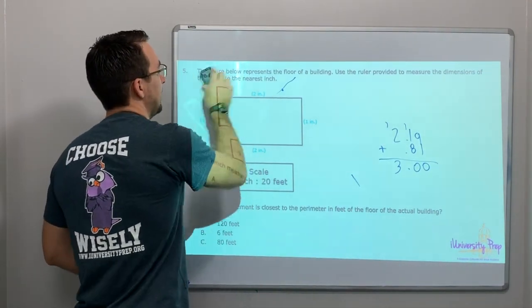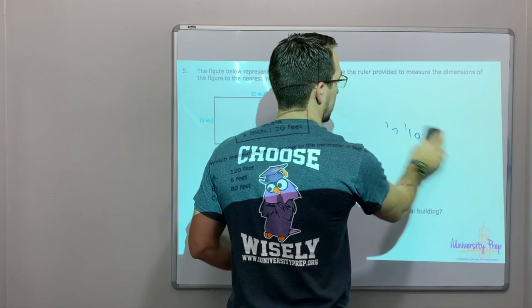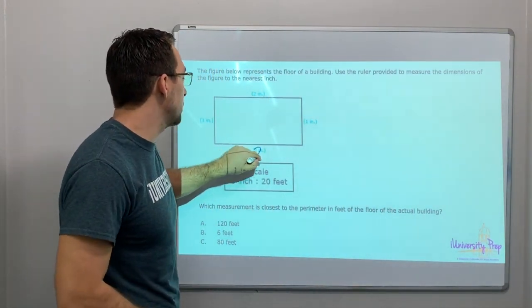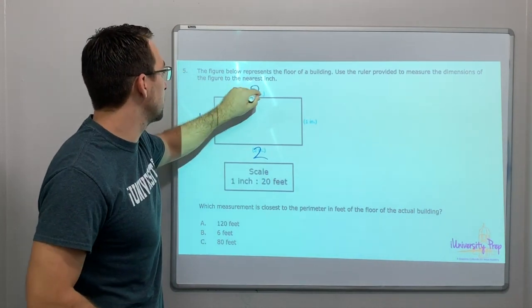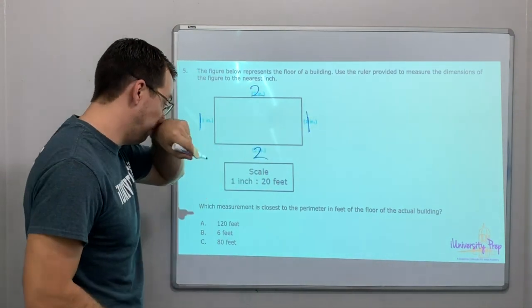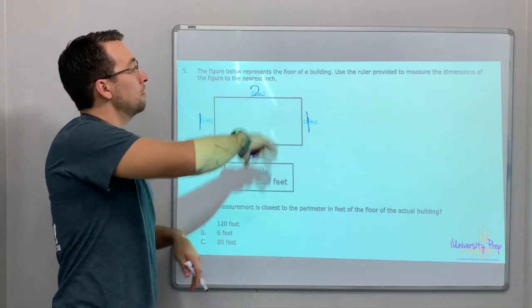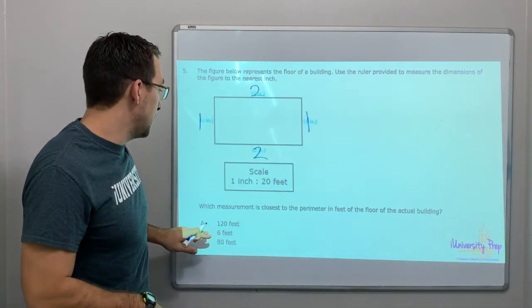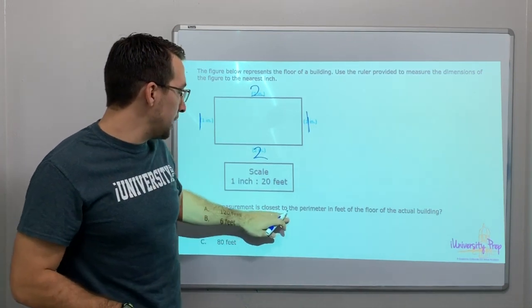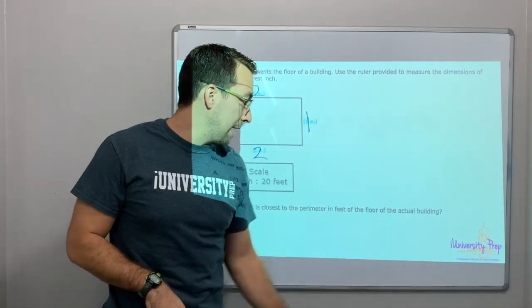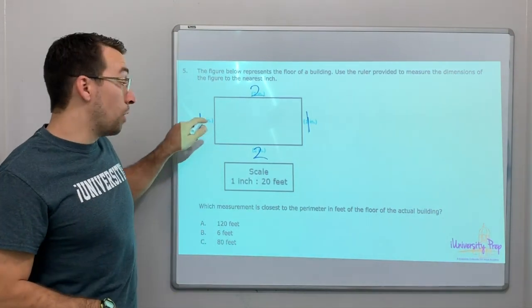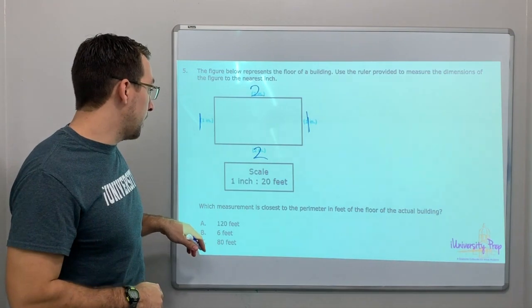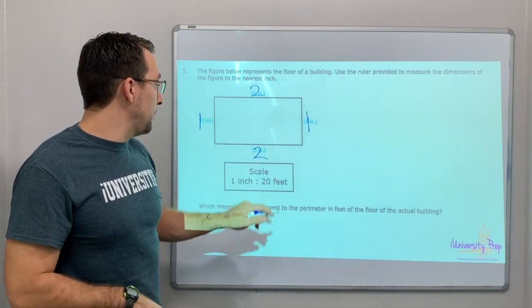I think you guys can see the blue, but I'll write just in case. So the perimeter side lengths are 2 inches, 1 inch, 2 inches, and 1 inch. The figure below represents the floor of a building. Use a ruler provided to measure the dimensions of the figure to the nearest inch. I did the measuring for you — that's 1 inch.